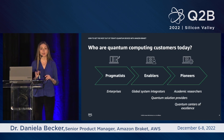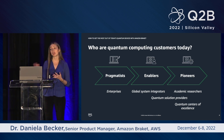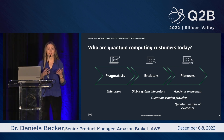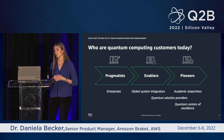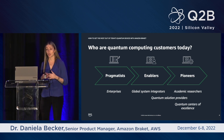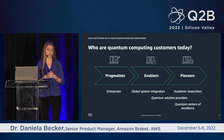Braket was launched almost exactly three years ago, and over that time we've worked with a whole spectrum of different customers, ranging from what we call pragmatists on the left-hand side of the spectrum, over enablers, all the way to what we call pioneers. Pragmatists are typically enterprise customers like Volkswagen or Fidelity, who are looking to explore the potential of quantum computing and understand what that might mean for their business in the long term. These customers often work with enablers and partner with them — a good example being global system integrators like Deloitte.